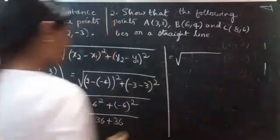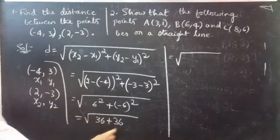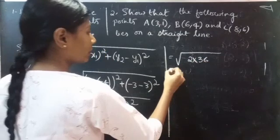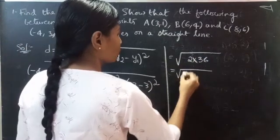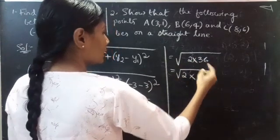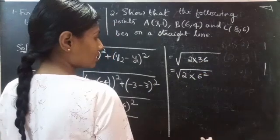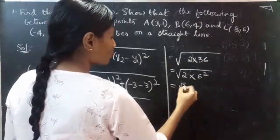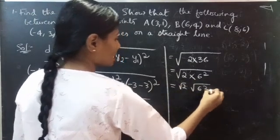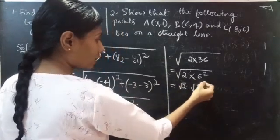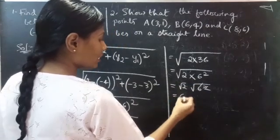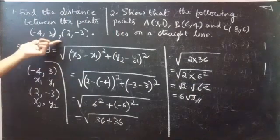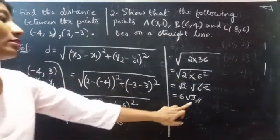Minus 6 whole square is 36, so we have 36 plus 36. We can write this as 2 times 36, and 36 can be written as 6 square. So this is square root of 2 into 6 square, which is 6 square root of 2. Finally, we will get 6 root 2. The distance between these two points is 6 root 2.